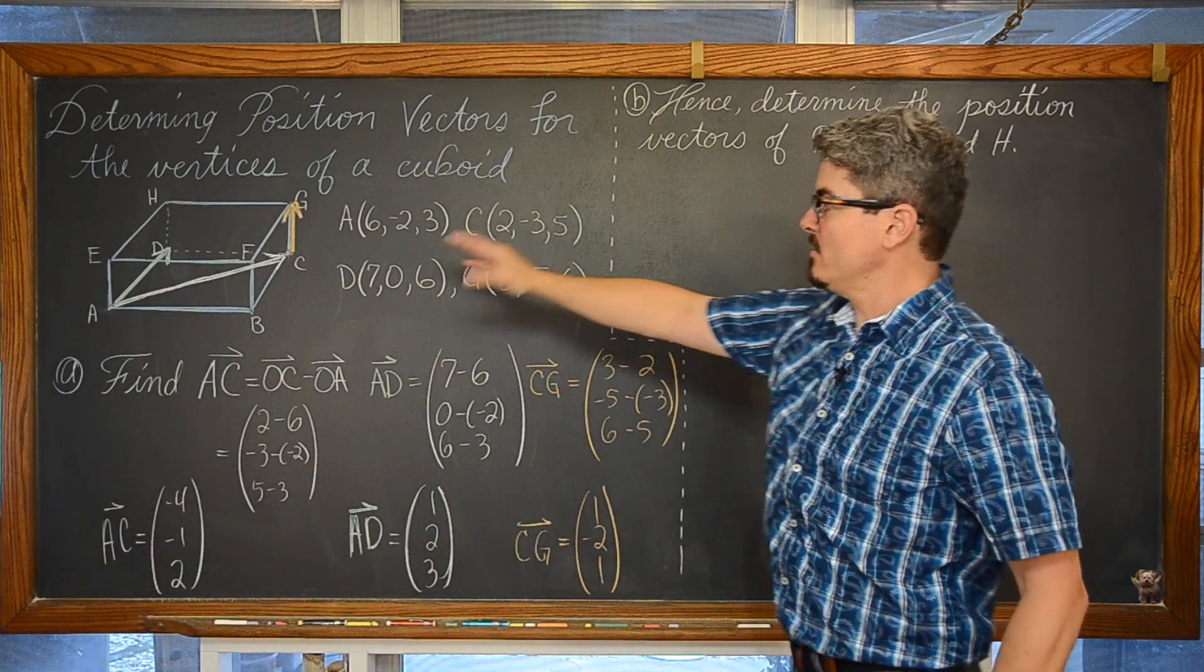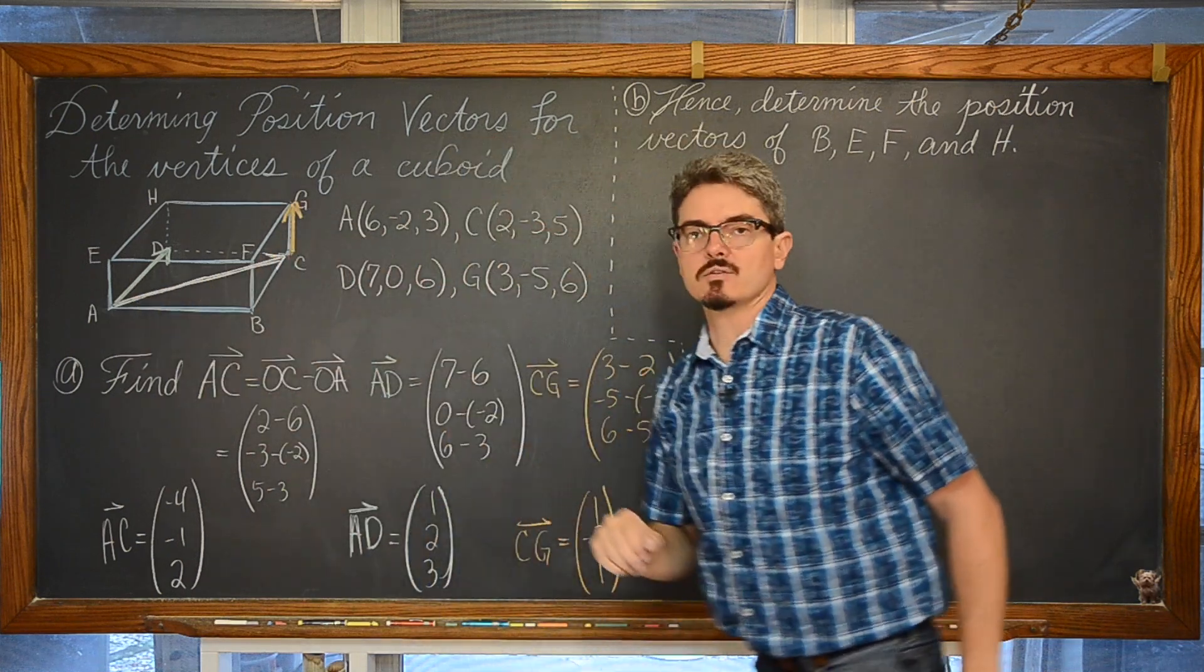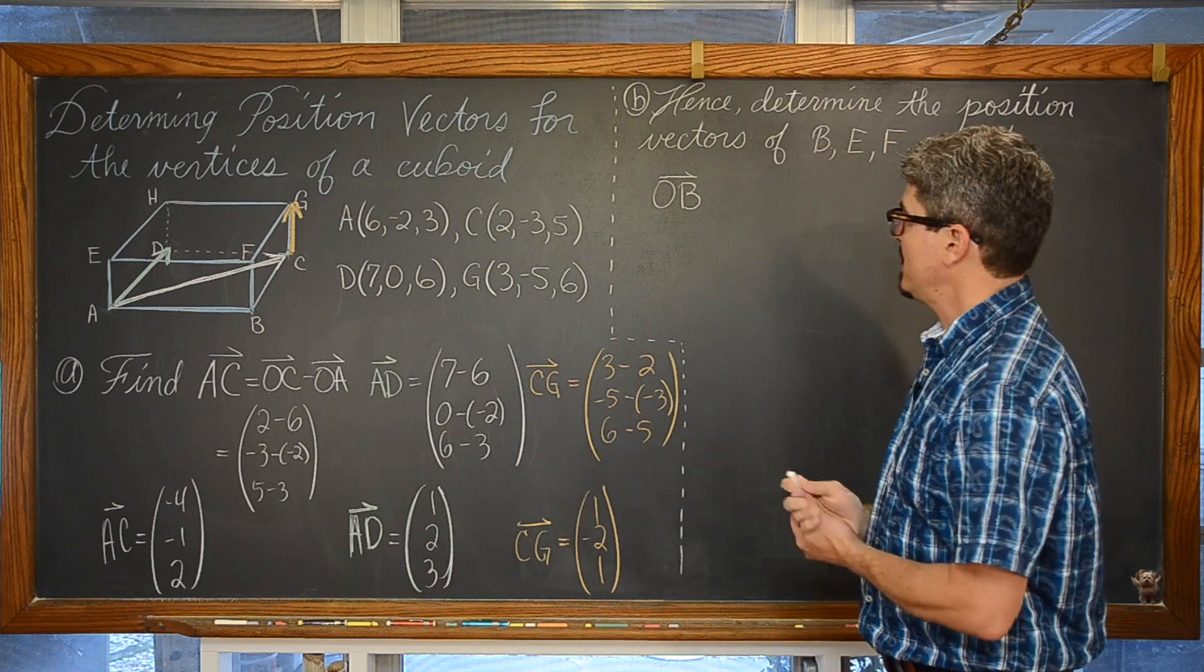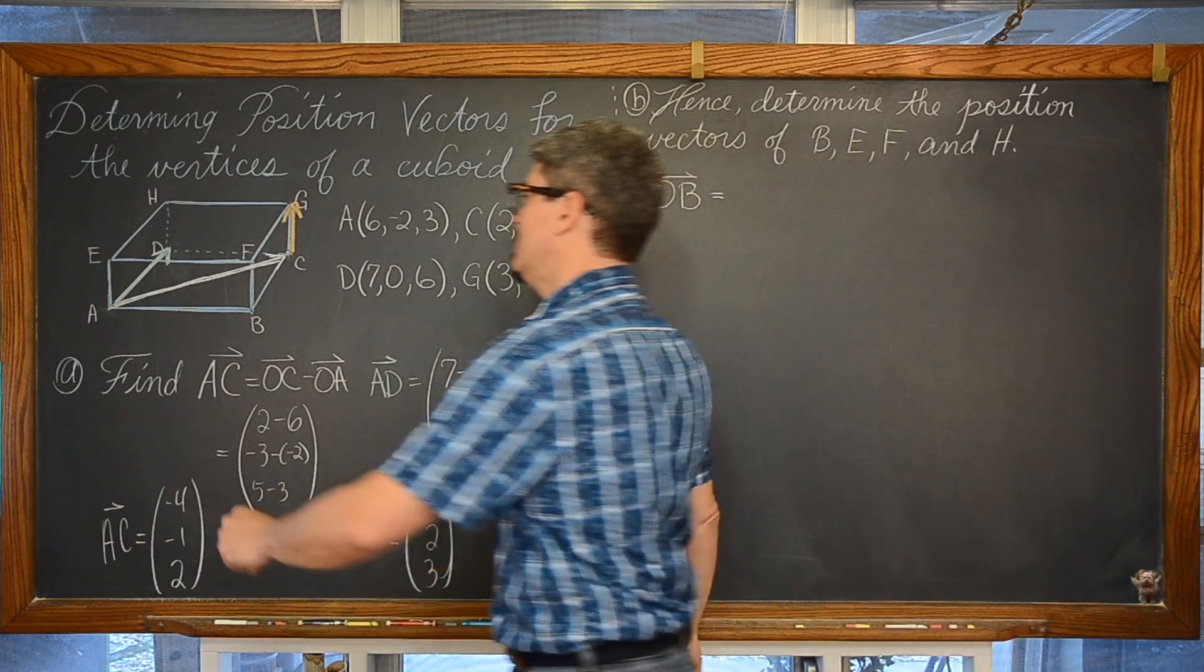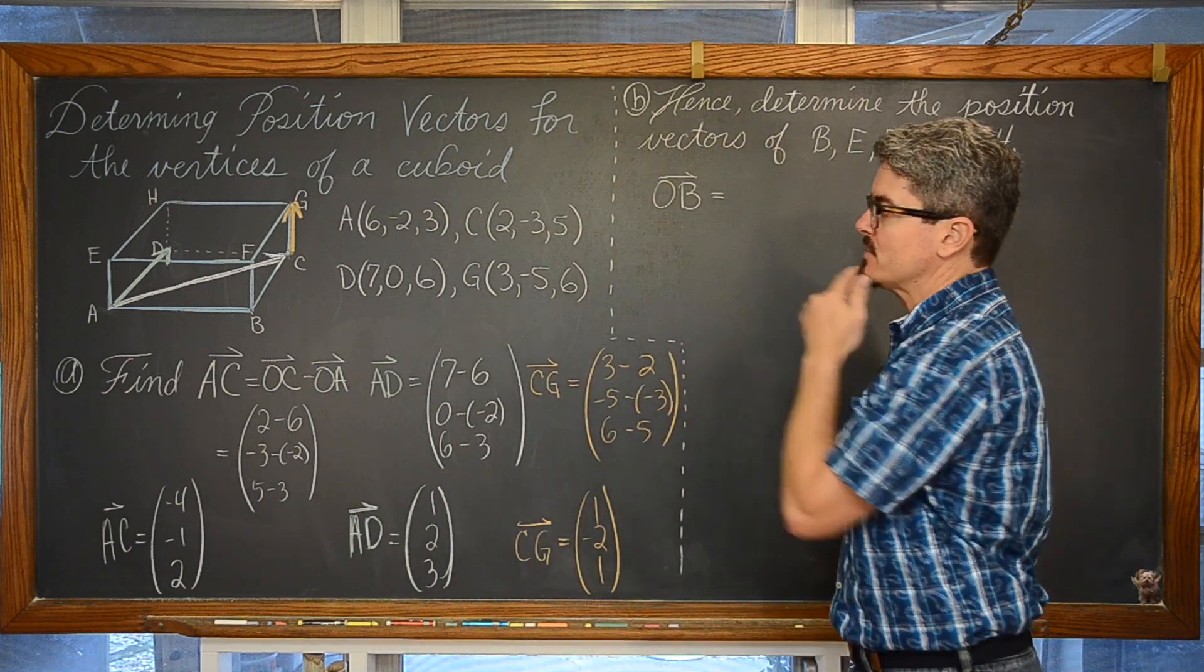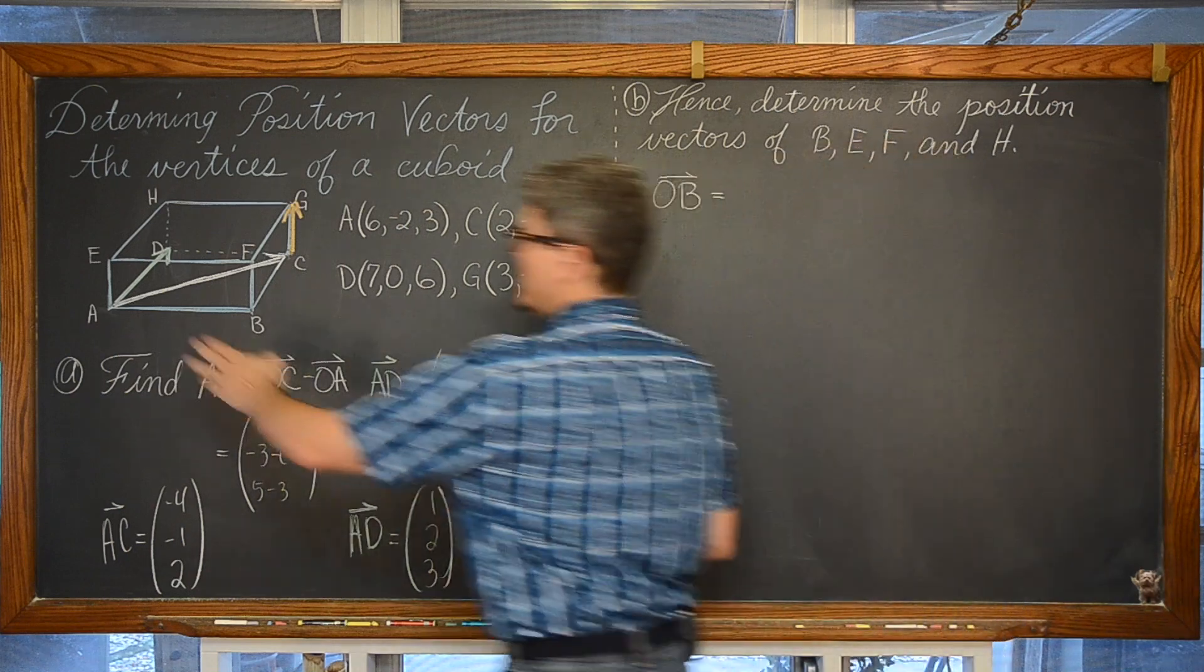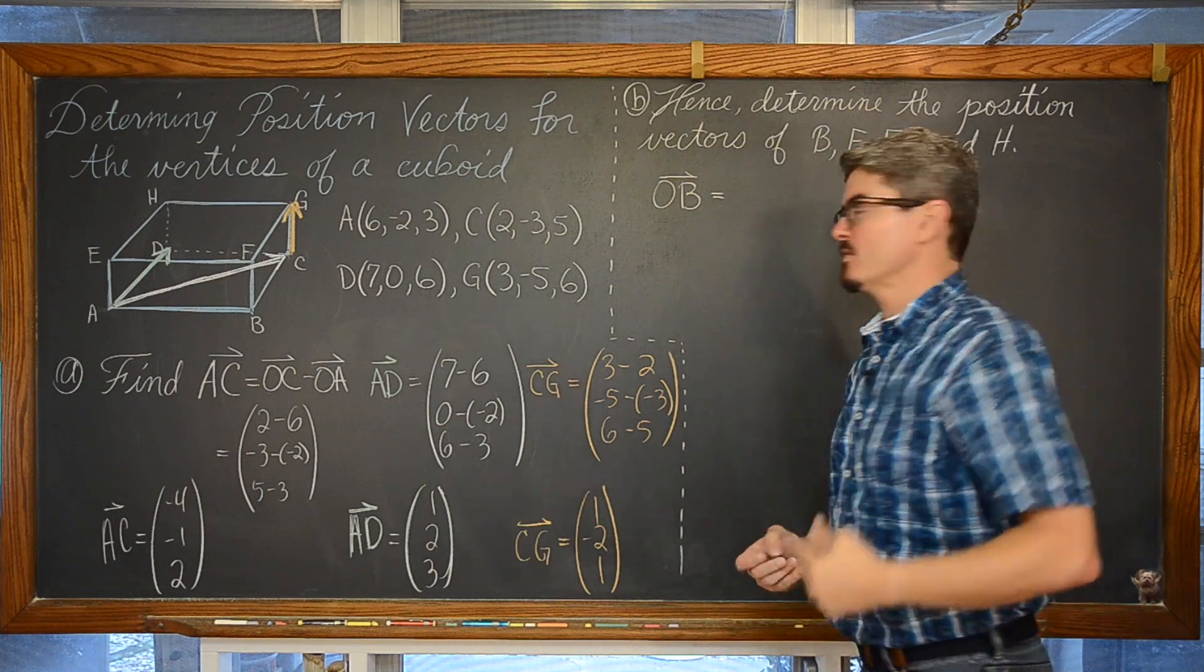And then finally we have vector CG going from vertice C to vertice G. Now, how can I use these three vectors, the green, the white, and the orange, AD, AC, and vector CG to create or write the position vector for coordinate B? So I have to start at the origin. Now, two of my given vertices start from vertex A. And I want to move through this cuboid, or maybe a parallelepiped on your particular problem.